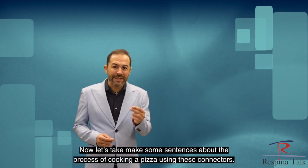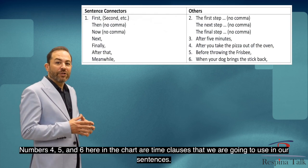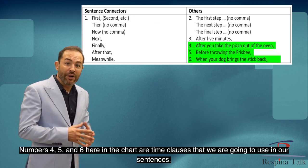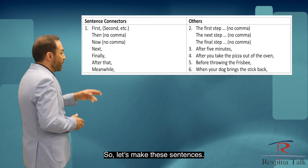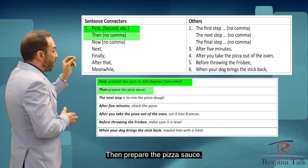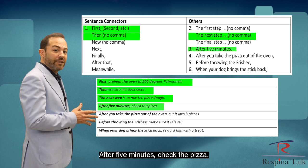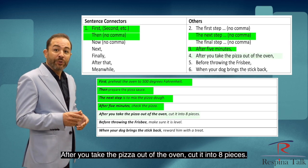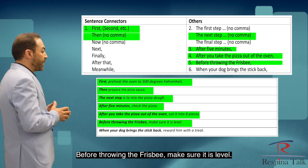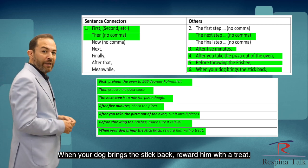Now let's make some sentences about the process of cooking a pizza using these connectors. Numbers four, five, and six in the chart are time clauses we are going to use in our sentences. First, preheat the oven to 500 degrees Fahrenheit. Then prepare the pizza sauce. The next step is to mix the pizza dough. After five minutes, check the pizza. After you take the pizza out of the oven, cut it into eight pieces. Before throwing the frisbee, make sure it is level. And finally, when your dog brings the stick back, reward him with a treat.